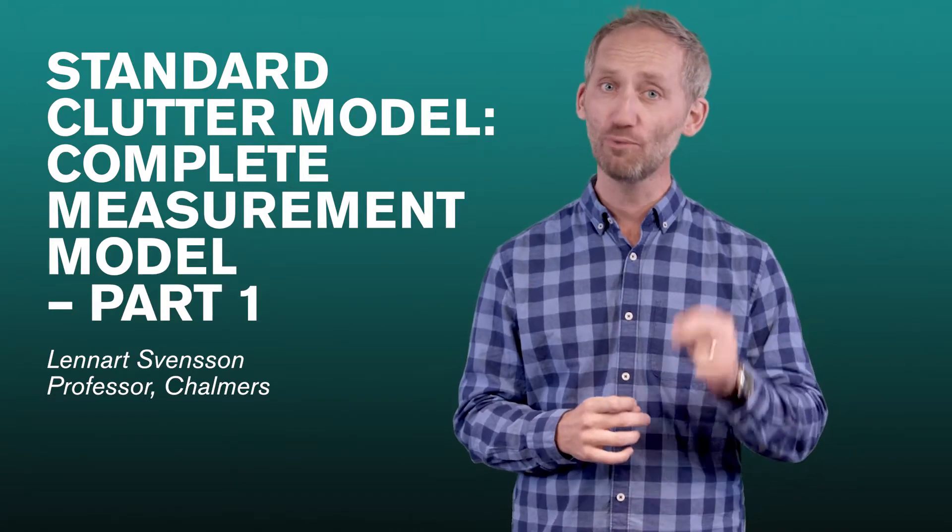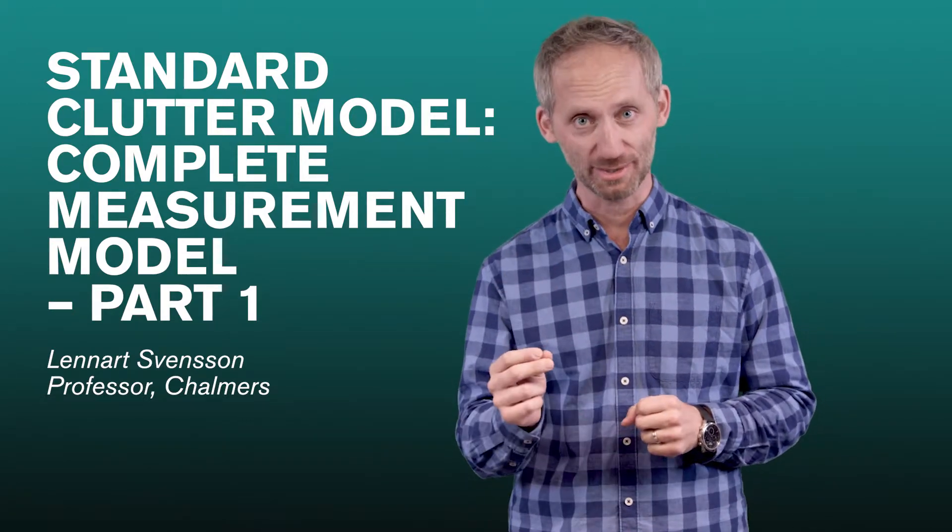We have seen how to model both object detections and clutter detections, and it is time to study how we can use those models to obtain a measurement model. To do this, we will introduce data association hypotheses and learn about a very commonly used trick to express complicated distributions.